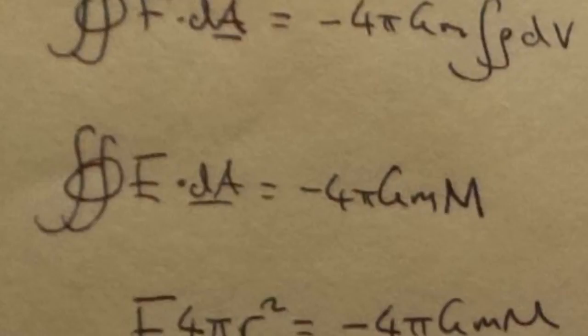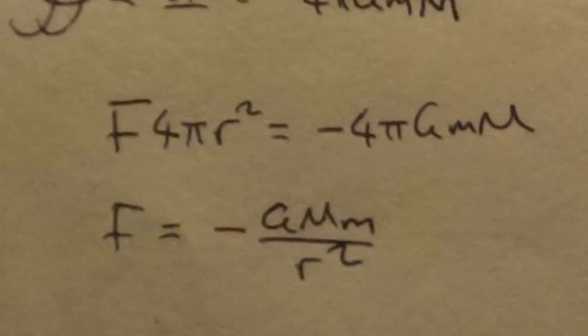So the surface integral there evaluates to F times 4 pi r squared. And that leaves us with F 4 pi r squared equals minus 4 pi GMm and I divide through by 4 pi r squared and you're left with F equals minus GMm over r squared, which is the equation that we had right at the start just in a scalar form because I made things scalar by taking a divergence.